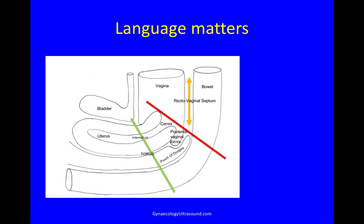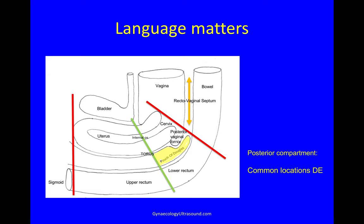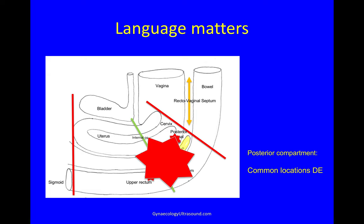This is the posterior vaginal fornix, this is the pouch of Douglas, and this is the bowel. Below the green line — below the level of the torus — is the lower rectum. The bowel above it is the upper rectum, and if you draw a line with the uterine fundus, then bowel above that level is called sigmoid. This is slightly arbitrary, but if we all use the same words we'll all know what we're trying to say. We call this area behind the uterus the posterior compartment, and common locations for deep endometriosis are the posterior vaginal fornix, at the torus, in the lower rectum, and in the upper rectum — and sometimes you have all of them together, adherent to each other — and that's called a frozen pelvis.